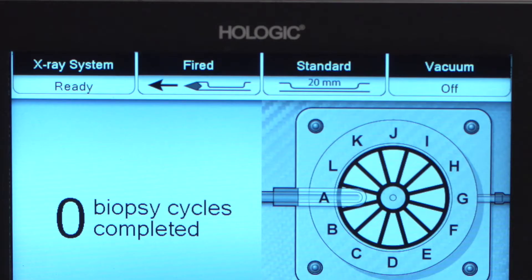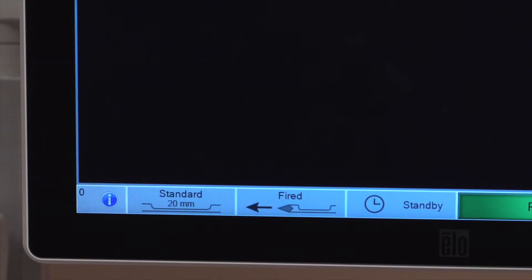The technologist will check that the system has recognized the correct aperture, either 12mm or 20mm, in the taskbar on both the technologist and imaging displays.